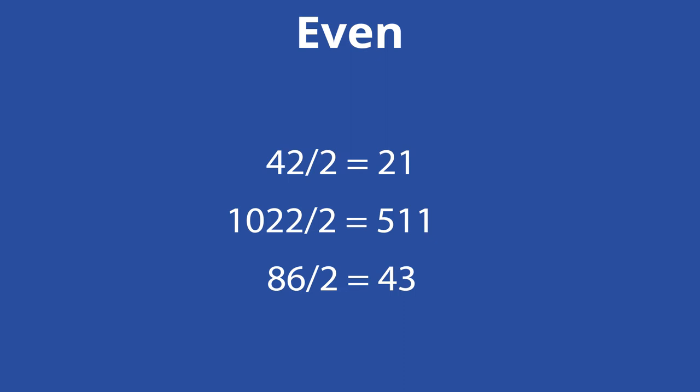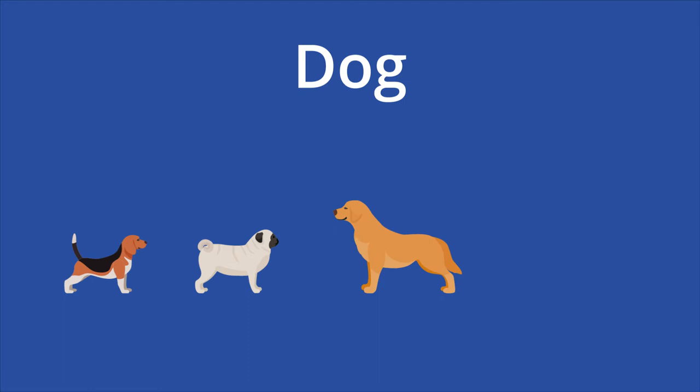For example, being divisible by two is a necessary condition of being an even number. On the other hand, sufficient conditions are qualities whose presence automatically qualifies a thing to be called the object in question.